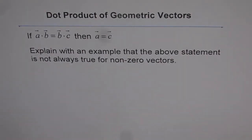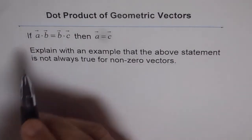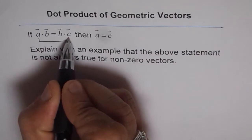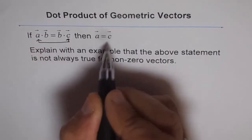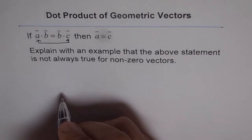This is a very interesting question. If we have A dot B equals B dot C, it does not mean that A and C will be equal. They could be different. So we need to explain this with an example.